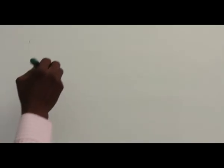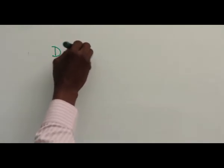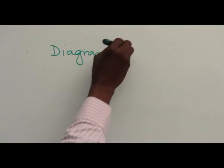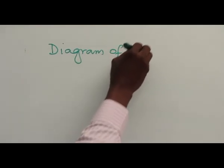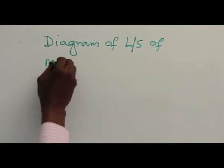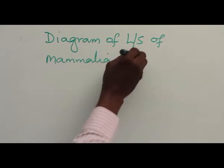Let's look at the structure of the eye. Diagram of longitudinal section of mammalian eye.